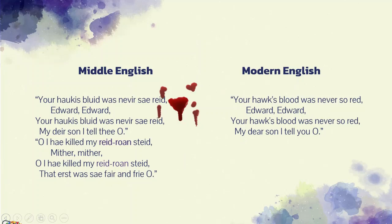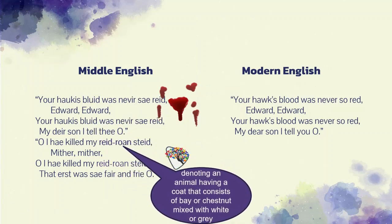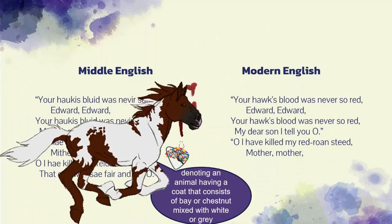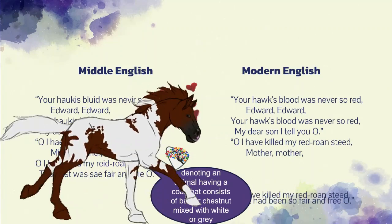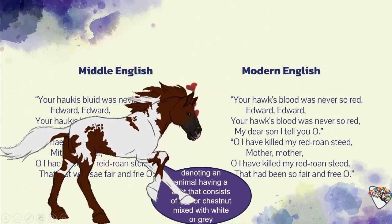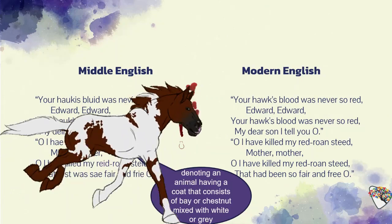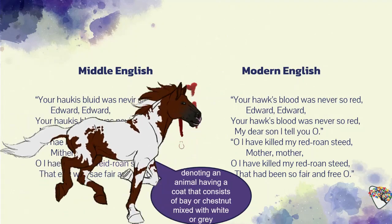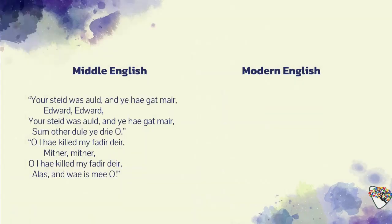'I have killed my red roan steed, mother, mother. That had been so fair and free.' Red roan denotes an animal having a coat of bay or chestnut mixed with white or gray. Edward says he has killed his horse, and he feels guilty for that. But the mother is once again not satisfied. 'Your steed was old, and you have got mare, Edward, Edward. Some other do and dree' — do and dree means grief and suffer. Your horse was old and you have other horses, so you shouldn't be sorry for that — tell me the truth.